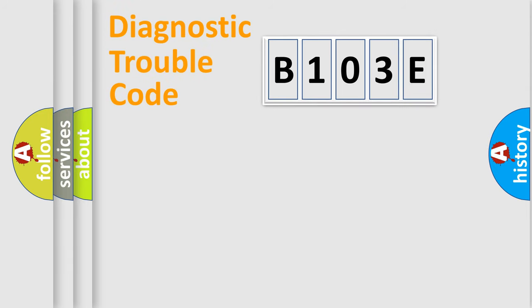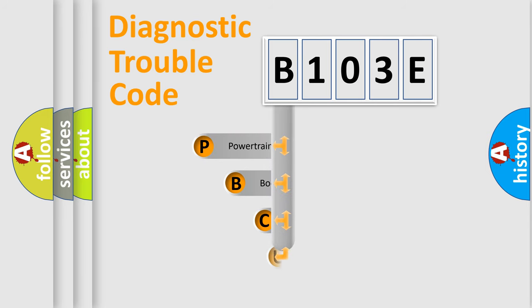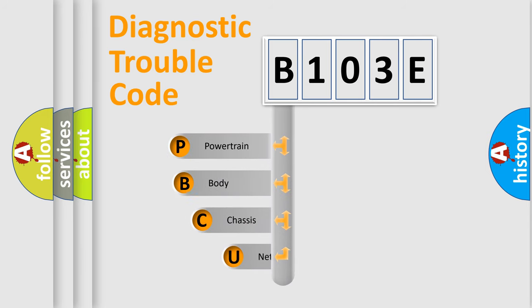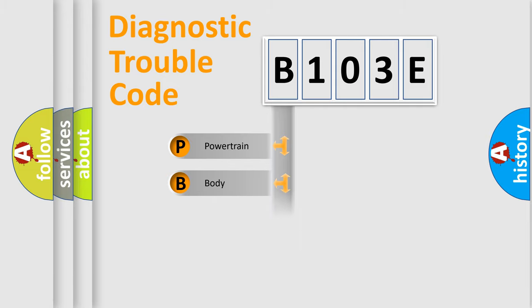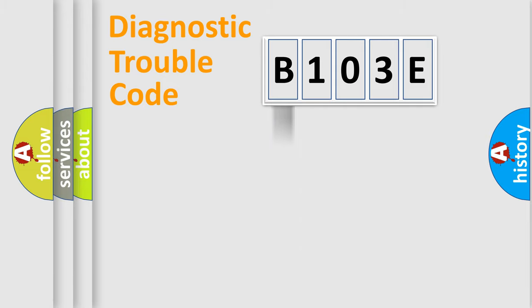Let's do this. First, let's look at the history of diagnostic fault code composition according to the OBD2 protocol, which is unified for all automakers since 2000. We divide the electric system of the automobile into four basic units: Powertrain, Body, Chassis, and Network.